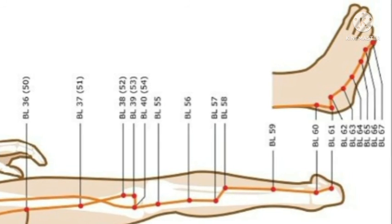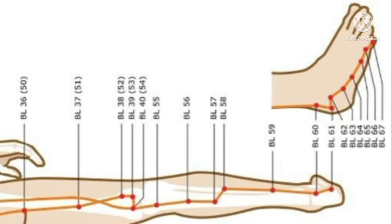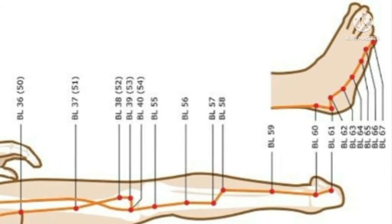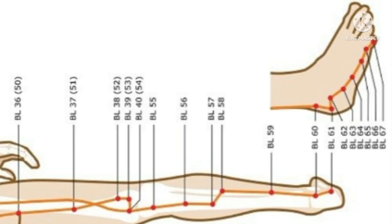UB paired organ is kidney, so UB meridian will connect to the kidney organ, the kidney meridian. In the next video we are going to see the kidney meridian. Thank you.